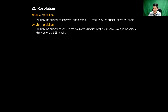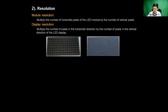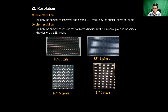So we've learned pixel and pixel pitch. What is the resolution of one module or one display? Module resolution is the number of horizontal pixels of the LED module multiplied by the number of vertical pixels. And display resolution is the number of pixels in the horizontal direction multiplied by the number of pixels in the vertical direction for the LED display. Here are some examples: 16×8 pixels, 32×16, 16×16. The higher the resolution of the screen, the more content can be displayed and the more detailed the picture — but the higher the resolution, the more expensive the cost.